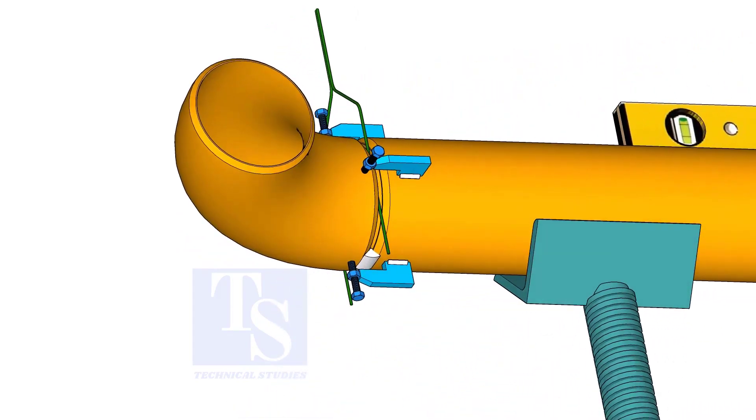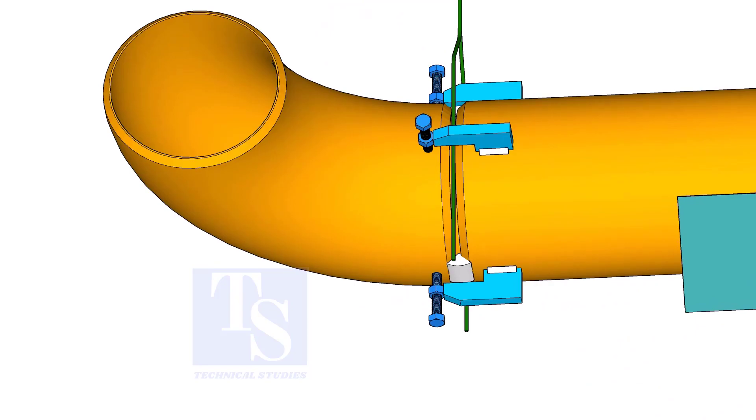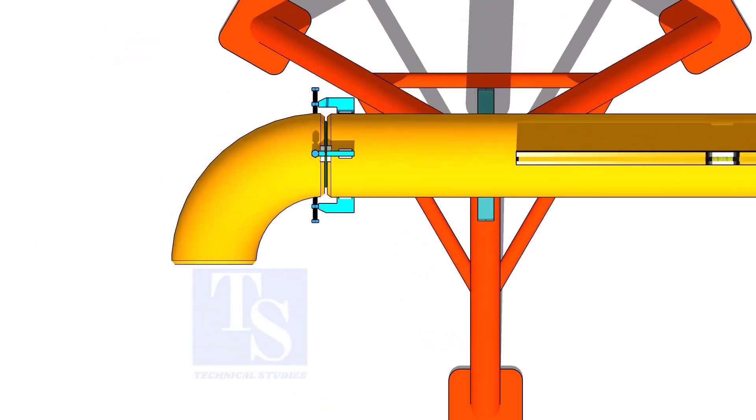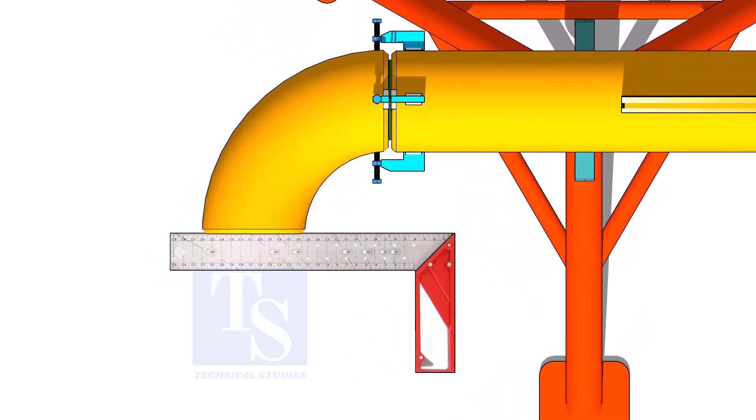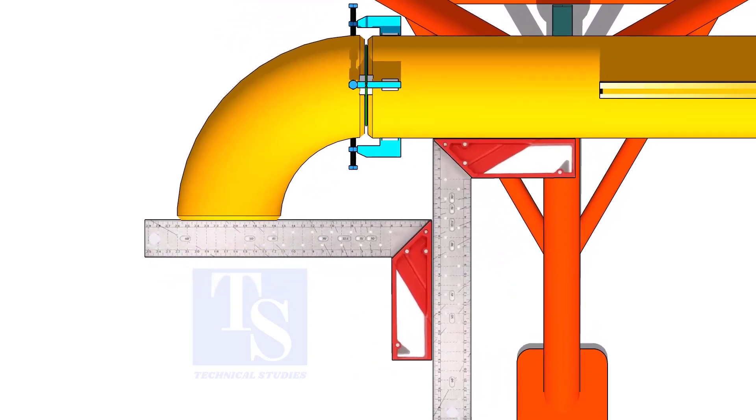Tack weld in the bottom side of the joint. Correct the squareness of the elbow, using right angles, as shown.